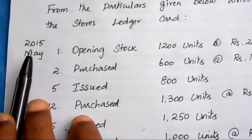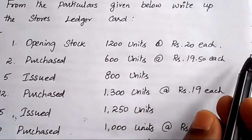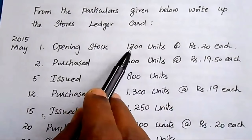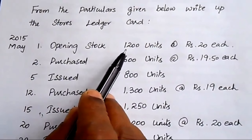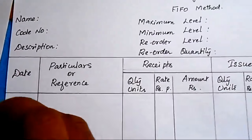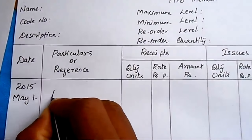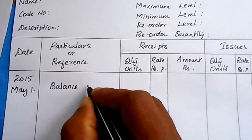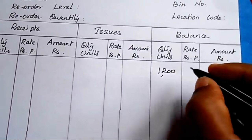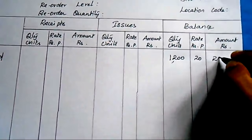On 2015 May 1st — opening stock: write 'Balance Brought Down' in the particulars. Quantity: 1200 units. Each unit price: ₹20. Amount: 1200 × 20 = ₹24,000. Enter this in the balance column since it is the opening stock.